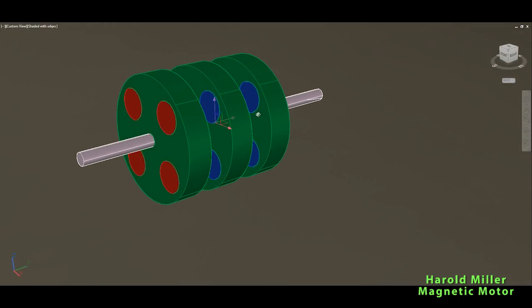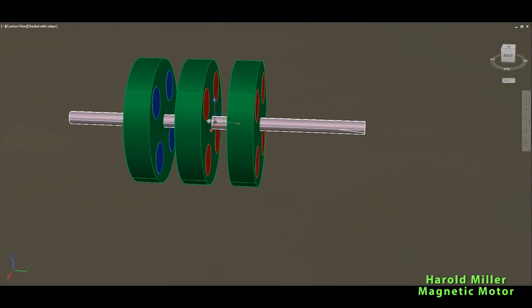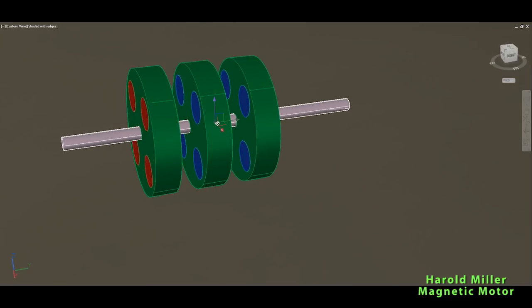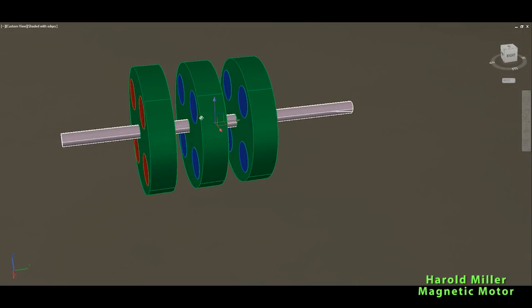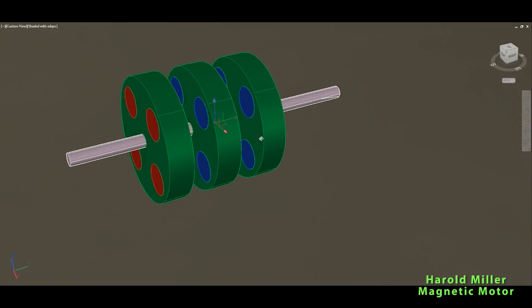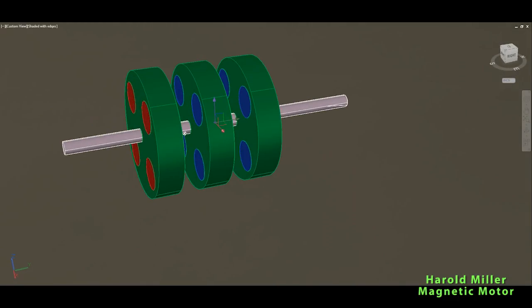And two of them repel each other. So you see blue-blue, and on this side you see red-blue. So these last two attract each other, and the first two actually repel each other.